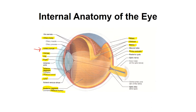You should also know the fovea centralis. The fovea centralis is the part of the eye where we focus our central vision — when you're looking at a video or your paper, you're focusing the image on your fovea centralis. You also need to know the optic nerve and the optic disc. The optic disc is where the optic nerve exits the eye; that area has no rods or cones, so it's called the blind spot.